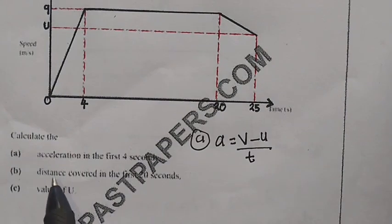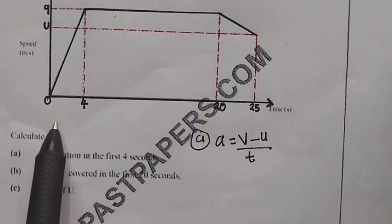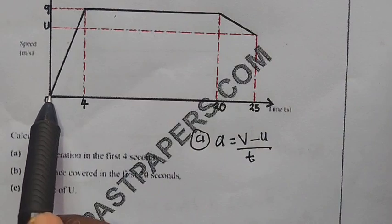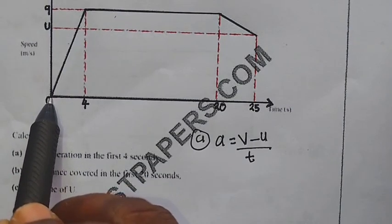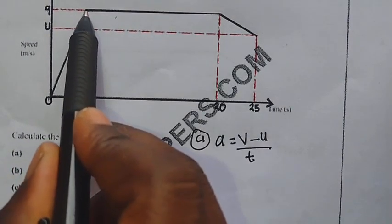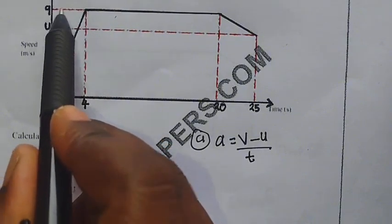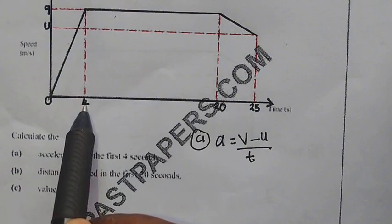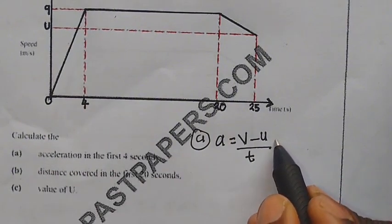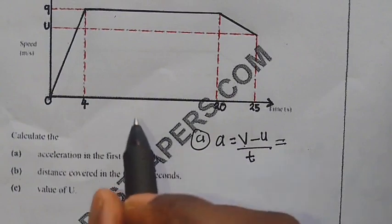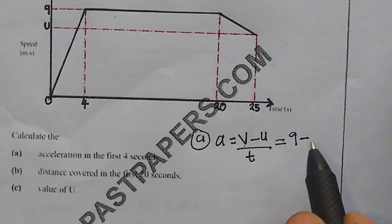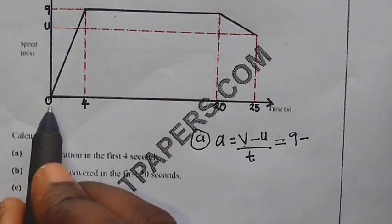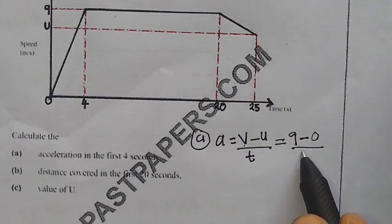Let's take note of the most important things that we are given. We are finding the acceleration in the first four seconds, meaning that this sprinter started from here, started sprinting, accelerating. So the initial velocity was 0 meters per second, the final was 9 meters per second, and time was 4 seconds. Where there is V, we put the final velocity which is 9, minus where there is initial velocity we put 0, over time which is 4.